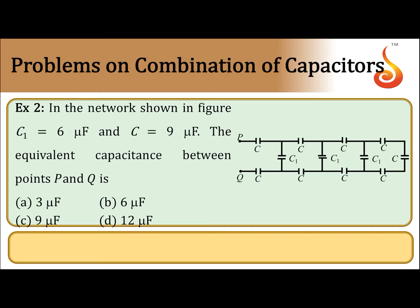In the network shown in figure, C1 is equal to 6 microfarad, C is equal to 9 microfarad. The equivalent capacitance between points P and Q is: options are 3 microfarad, 6 microfarad, 9 microfarad, 12 microfarad.